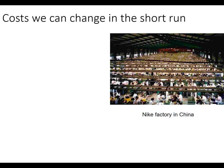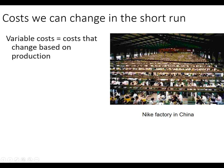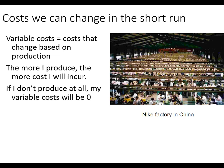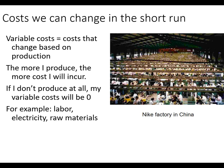There are some costs we can change in the short run. This is a picture of an older Nike factory in China — lots of people making shoes. The more shoes Nike wants to make, they have to increase what are called variable costs — costs that change based on production. The more quantity I produce, the higher the cost. If we don't produce anything at all, variable costs will be zero; if we shut down, we can escape variable costs but not fixed costs. Examples include the number of workers hired, hours worked, electricity, and any raw materials or labor.